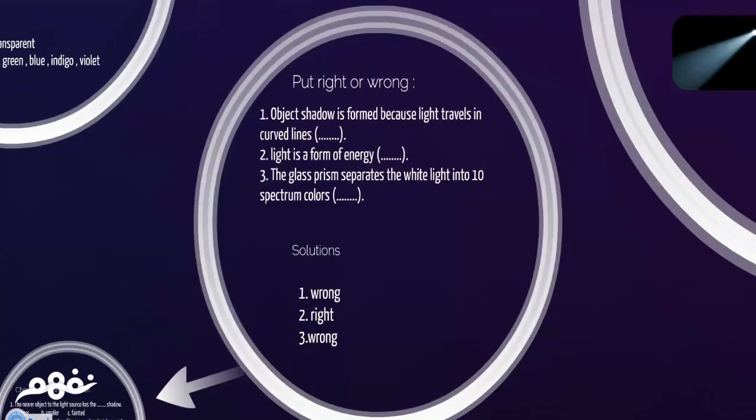Right or wrong. Object shadow is formed because light travels in curved lines. Of course, this is wrong. We said that light travels in straight lines. Two, light is a form of energy. Yes, that's right. Light is, of course, one of the energy forms. Number three, the glass prism separates the white light into ten spectrum colors. Of course, this is wrong. We said that white light will be separated into seven spectrum colors.